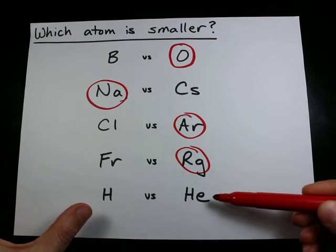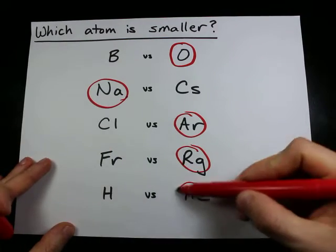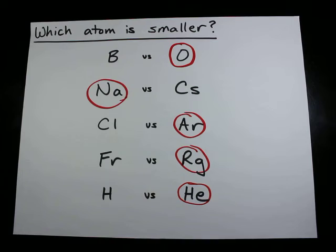And hydrogen versus helium are the only two elements in the first row. Helium, being further to the right, is smaller.